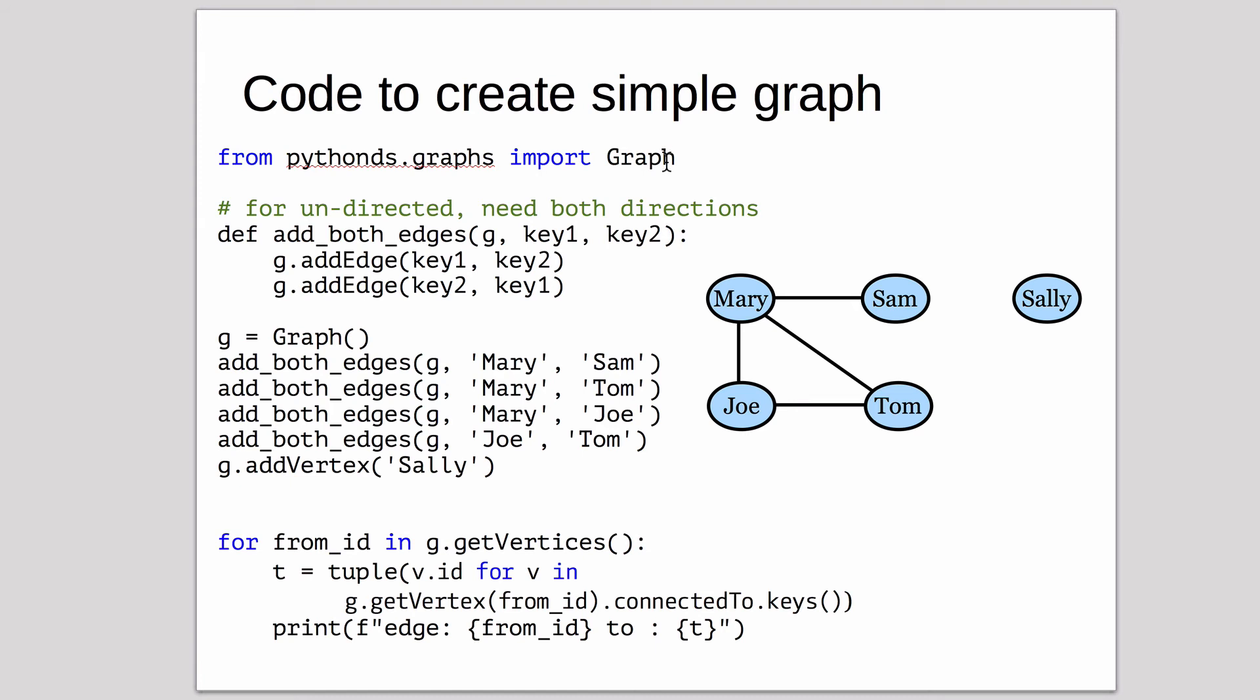You always use the Pythonds code, so you'll have to import the Pythonds library. I'll put a link on the video for where that is. Since for an undirected graph, you have to add both directions, I made a little method for that.